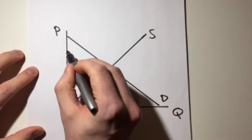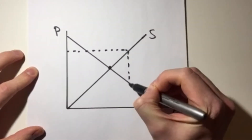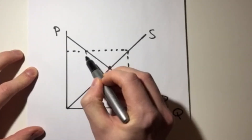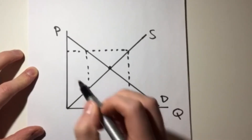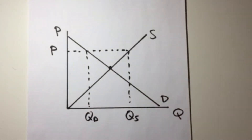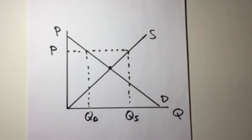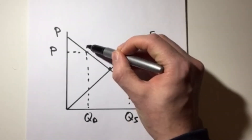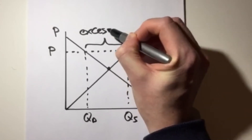Let's start here at this price, which corresponds to this quantity supplied, Qs, and this quantity demanded, Qd. As we can see, in this situation, the quantity supplied is much greater than the quantity demanded. This means that we're in a position we're going to call excess supply. What is occurring when we're in a position of excess supply is that there is too much of the good on the market and not enough demand — producers have produced too much and not enough people want to buy it. We'll call this area here our excess supply.